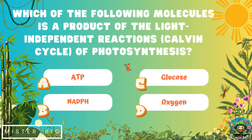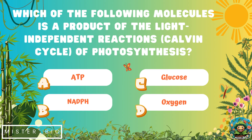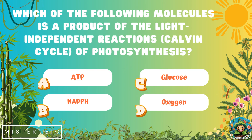Next: which of the following molecules is a product of the light-independent reactions — the Calvin cycle — of photosynthesis? A) ATP, B) NADPH, C) glucose, or D) oxygen.